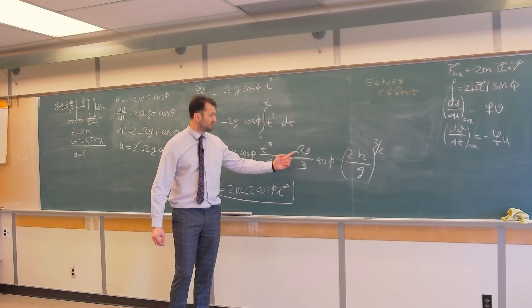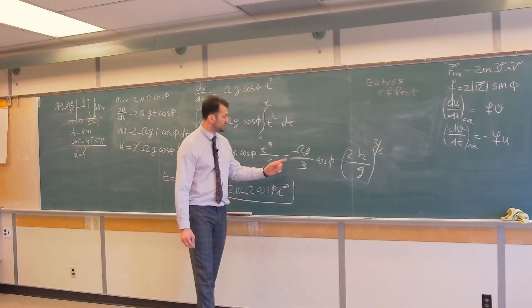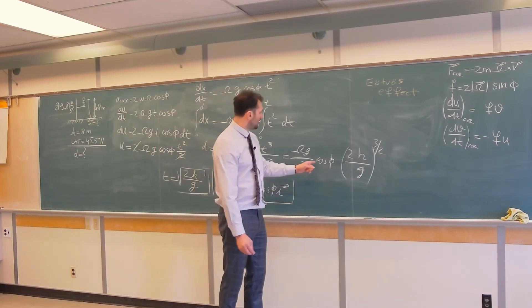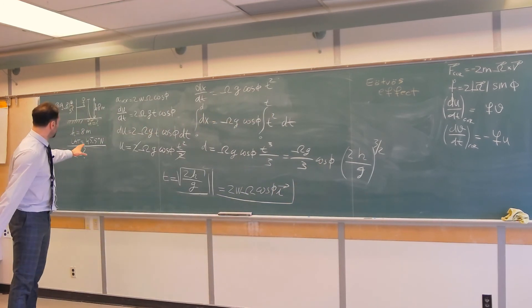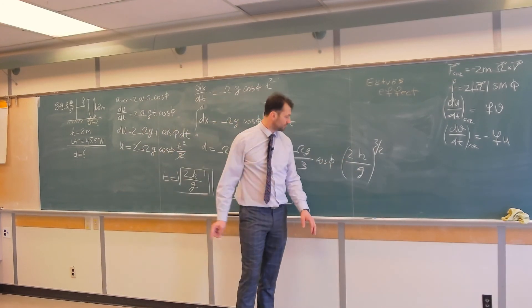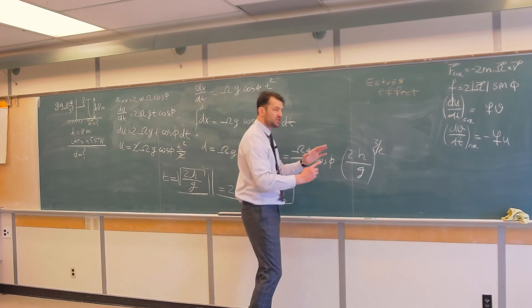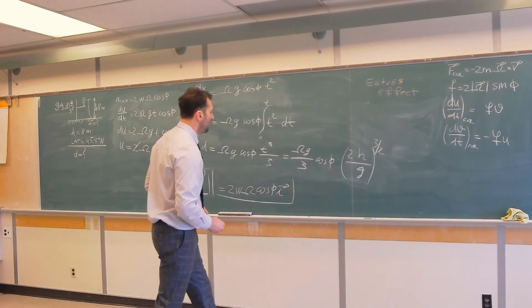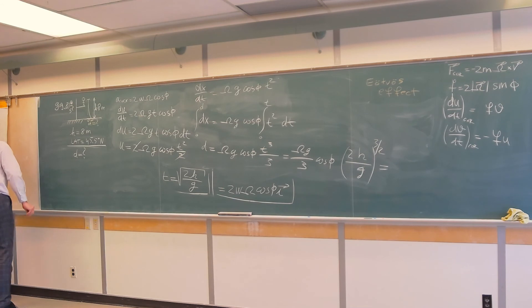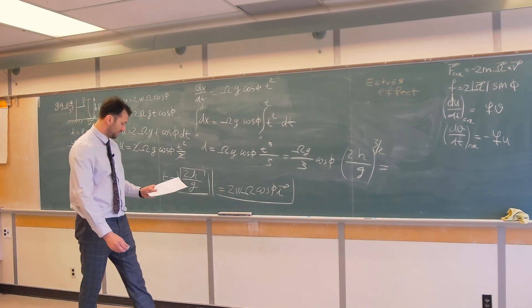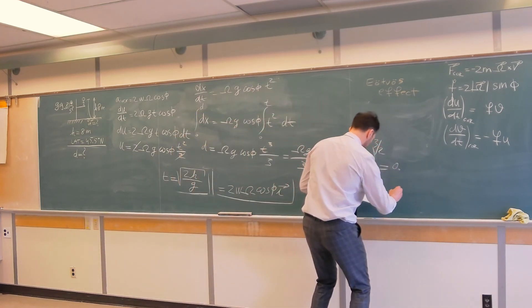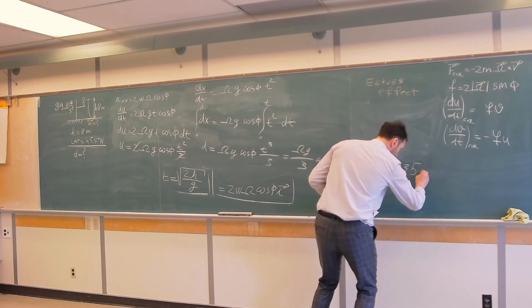Omega we know is 7.27 times 10 to power negative 5 per second. G is 9.81, given over there. 3 is 3. Phi is latitude, given as 45.5 degrees, so we can calculate this cosine. H is 8 meters. G is over here. So I could combine this g, make this more fancy, but I'm not going to. If you plug in the numbers, let's see if I have the correct answer. I do. If you plug in numbers, you get that this deviation is 0.35 millimeters.